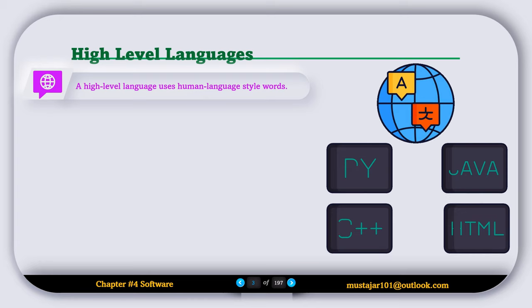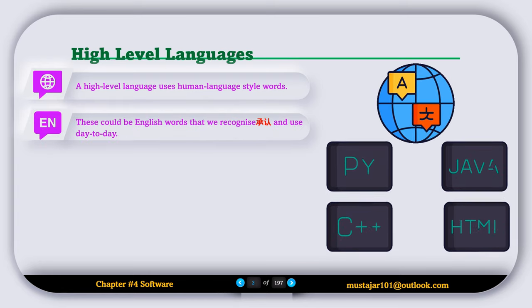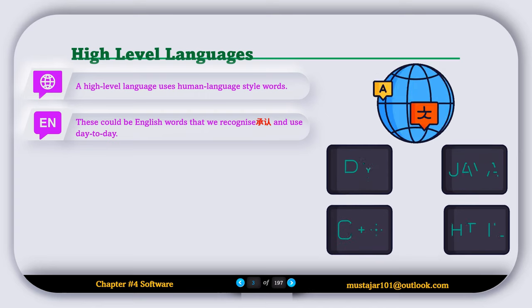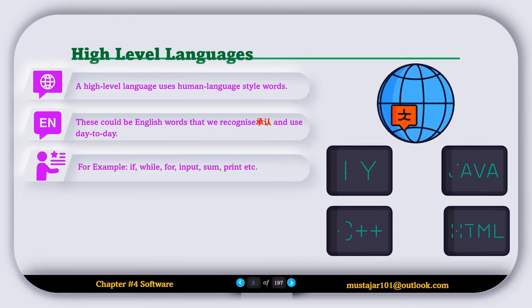High-level Languages. A high-level language uses human language style words. These could be English words that we recognize and use day-to-day. For example, if, while, for, input, some, trend, etc.